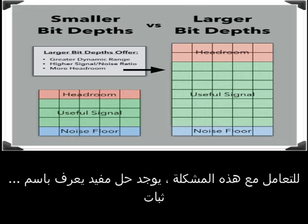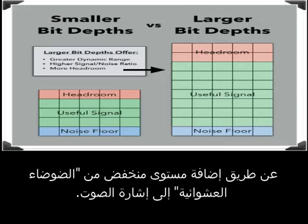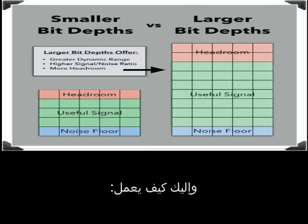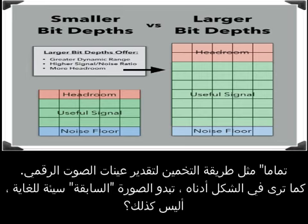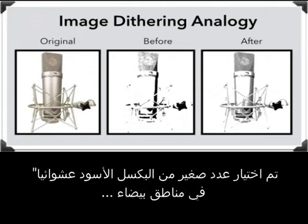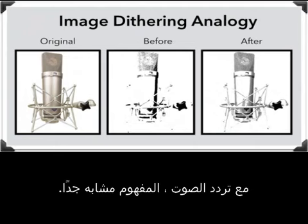To deal with this problem, there's a handy solution known as dither. When reducing a 24-bit file down to a 16-bit file, dither is used to essentially mask a large portion of the resulting distortion by adding a low level of random noise to the audio signal. The popular analogy used to explain it is dithering with images: when a color photo is converted to black and white, mathematical guesswork determines whether each colored pixel should be quantized to a black or white pixel — just like guesswork is done to quantize digital audio samples. With dither, a small number of white pixels are randomized into the black regions and vice versa, and by adding this random noise to the image, the result looks much better. With audio dithering, the concept is very similar.